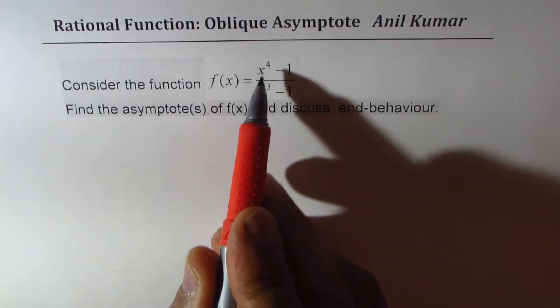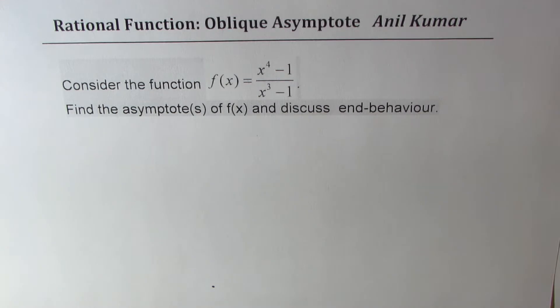Now, since the degree of the numerator is one higher, what do you expect? You expect an oblique asymptote, correct? I think now the question is very clear. You can pause the video, answer the question, and then look into my solutions.